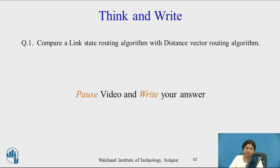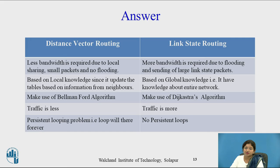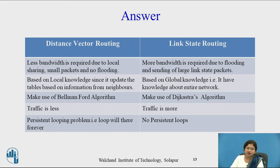Comparing link state routing with distance vector routing: in distance vector routing less bandwidth is required due to local sharing and small packets with no flooding, whereas link state routing requires more bandwidth due to flooding and large link state packets. Distance vector is based on local knowledge; link state is based on global knowledge of the entire network. Distance vector uses the Bellman-Ford algorithm; link state uses Dijkstra's algorithm. Traffic is less in distance vector and more in link state due to flooding. Distance vector has a persistent looping problem, whereas link state has no persistent loops.